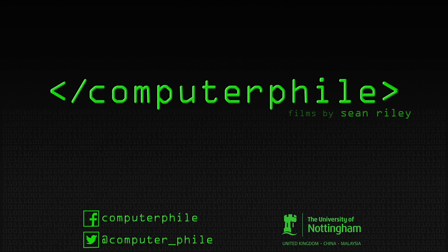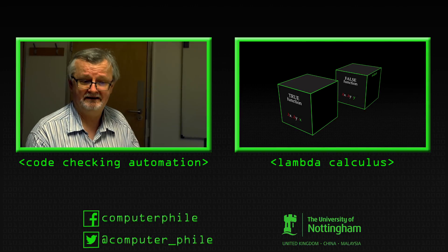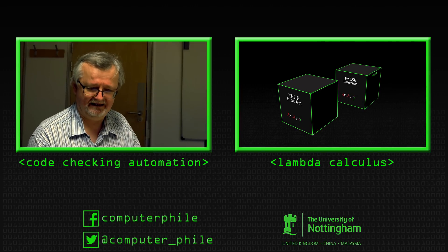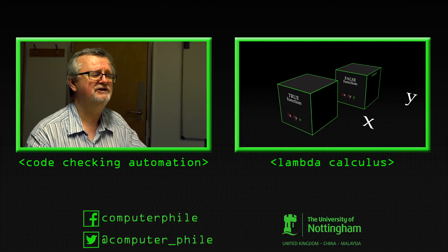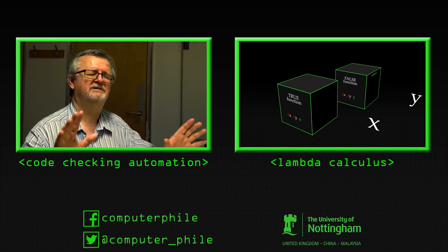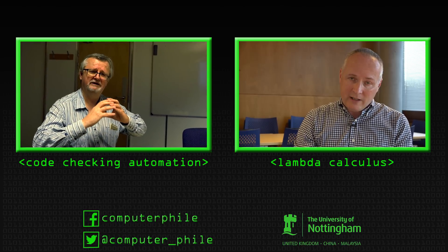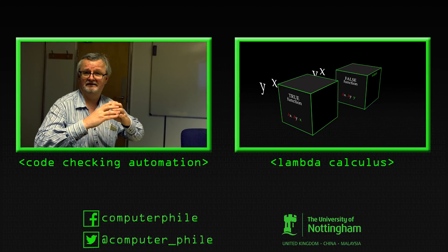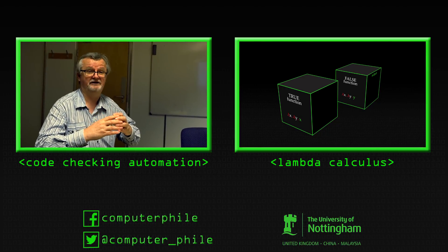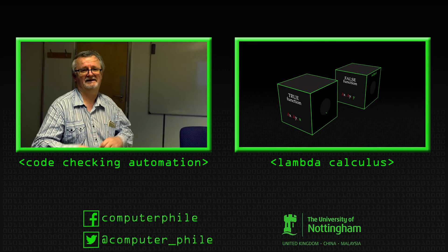Two lambda expressions here, both of which take two inputs, X and Y — one chooses the first one, X, and one chooses the second one, Y. So what can we actually do, and design a programming language that we could all use, which became Haskell.